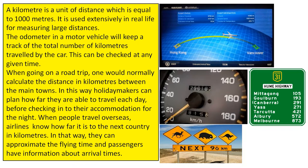When people travel overseas, airlines know how far it is to the next country in kilometres. In that way they can approximate the flying time and passengers have information about arrival times.